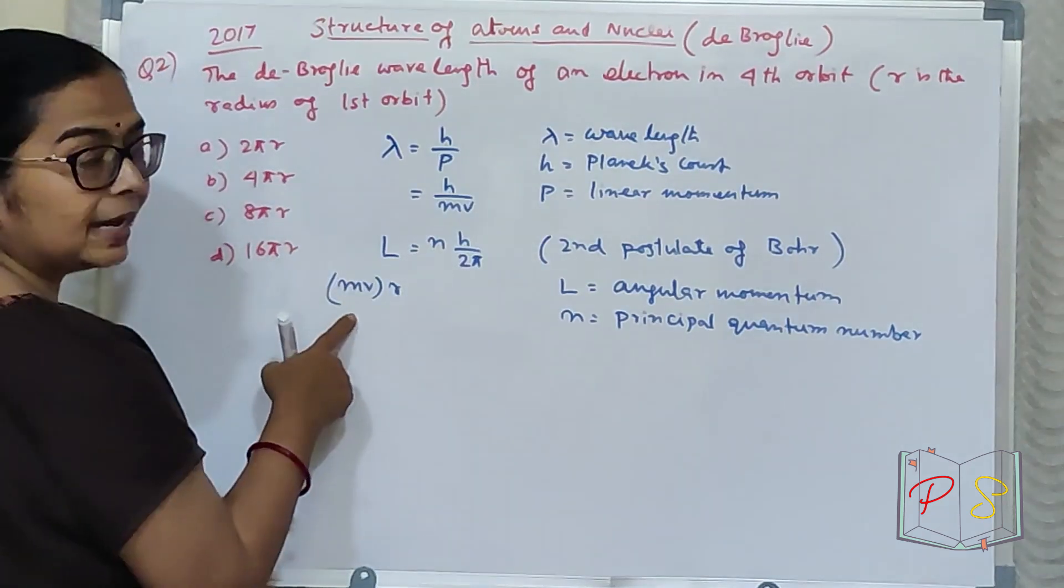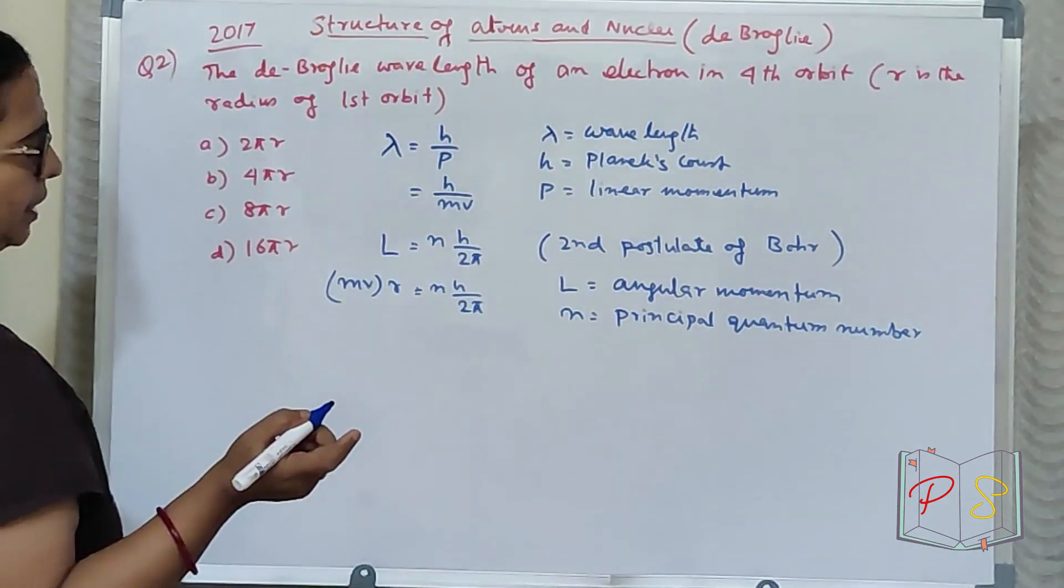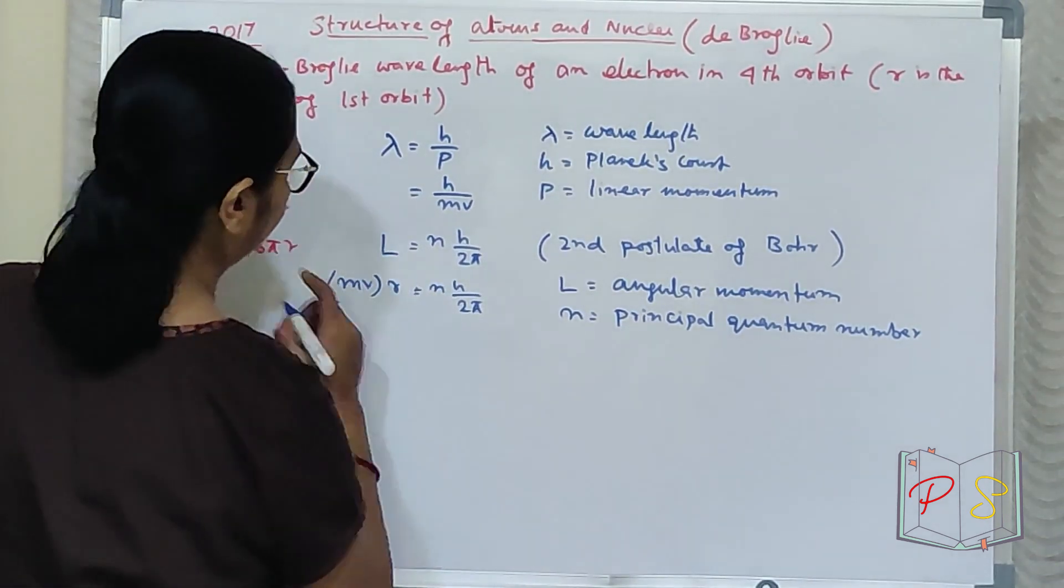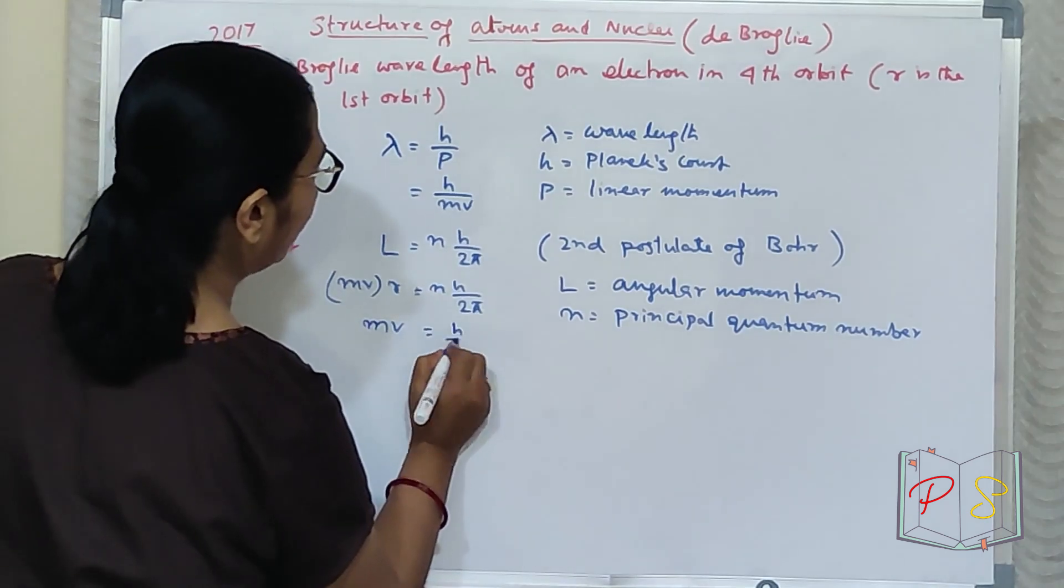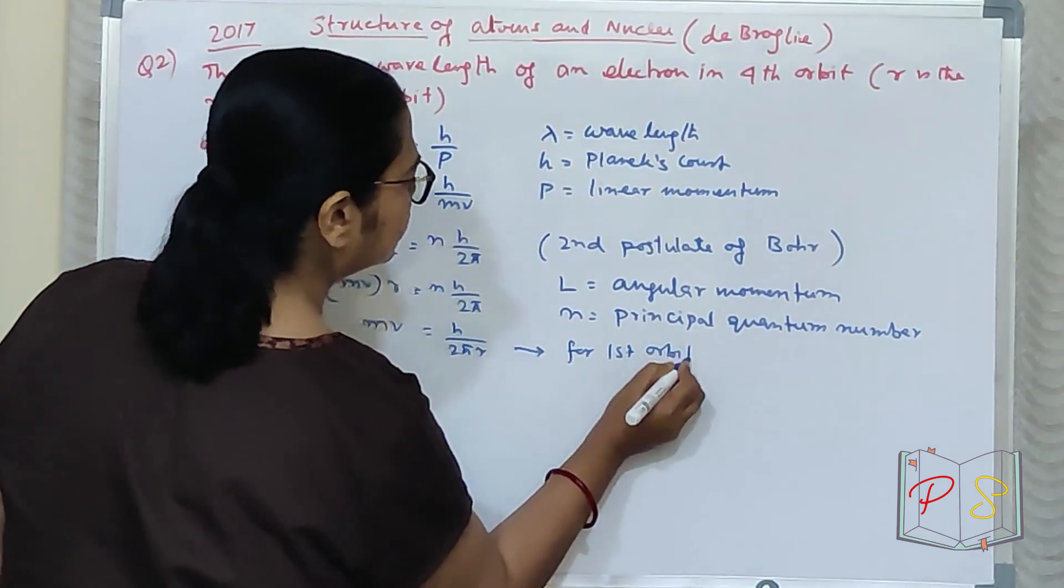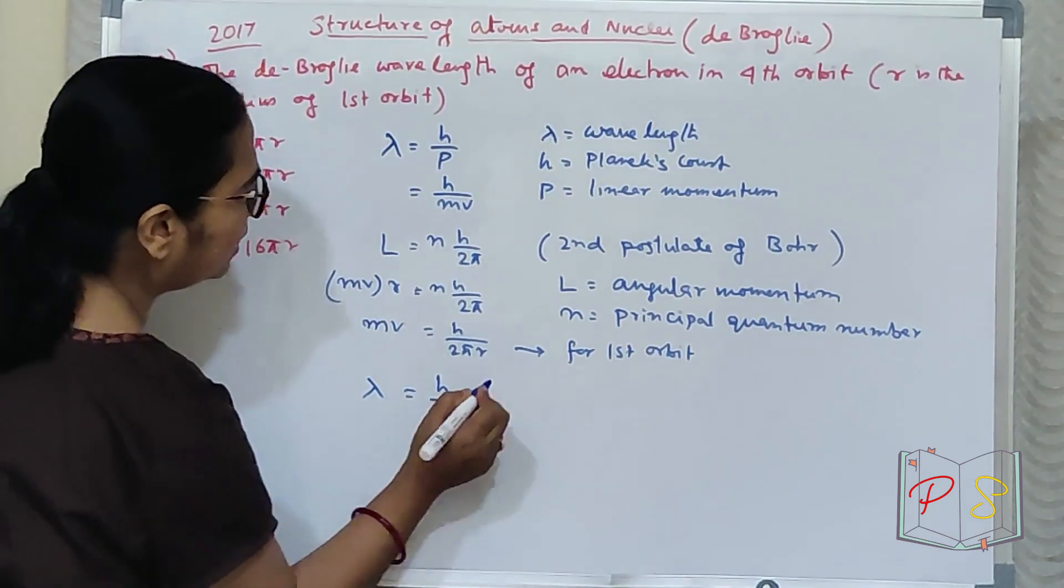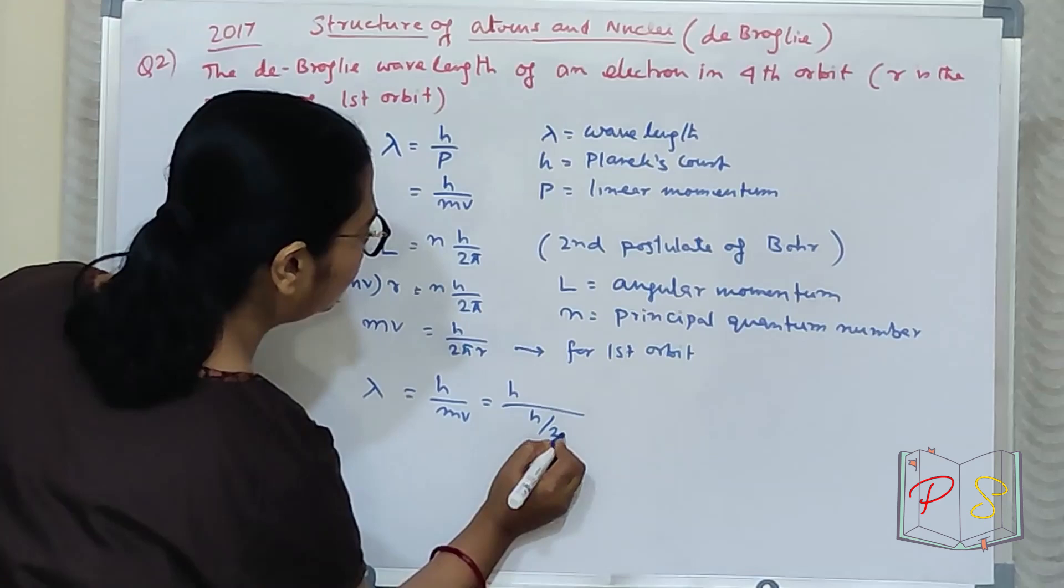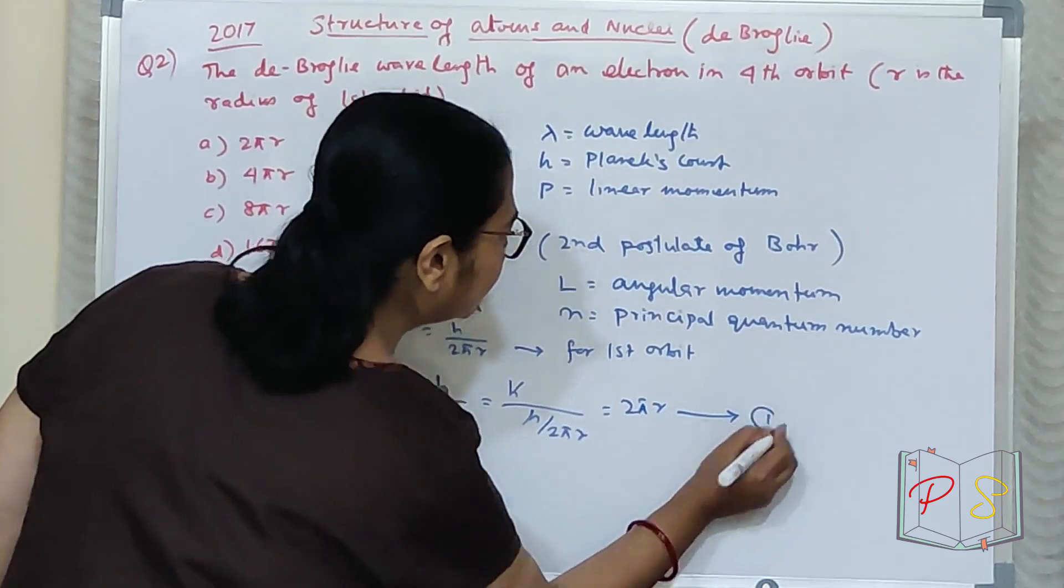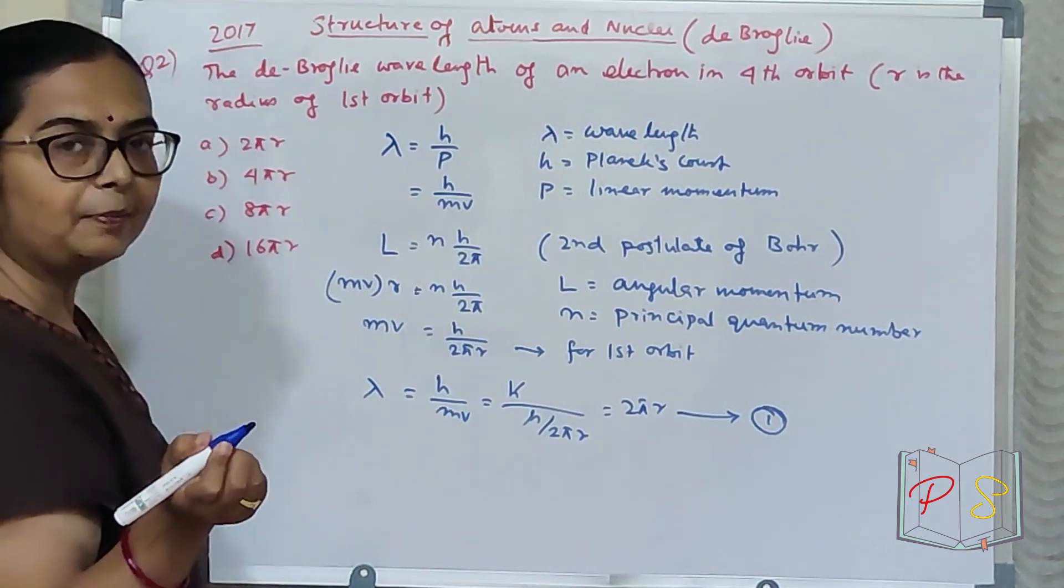So what do we need to do? L equals m·v·r. L = n·h/2π. For the first orbit, if we need to find lambda, n will be 1. So mv = h/2πr for first orbit. Lambda = h/mv = h/(h/2πr). h cancels, giving 2πr. This is equation number 1. Lambda for the first orbit.